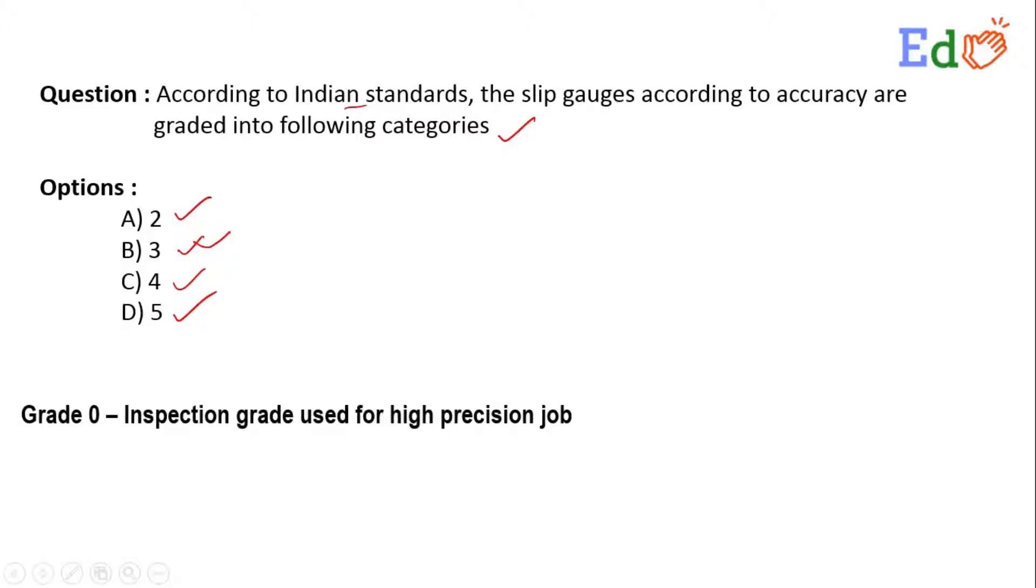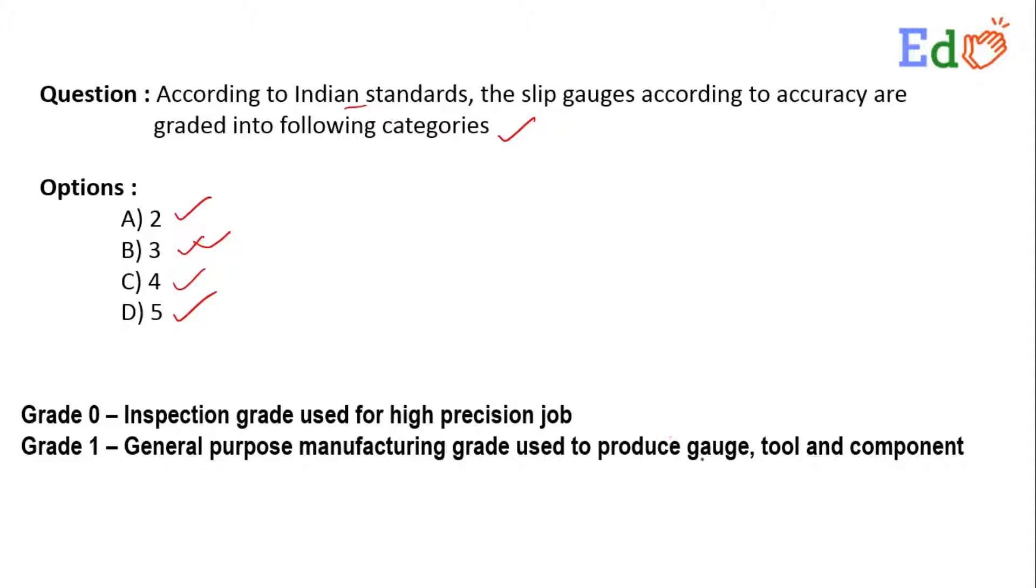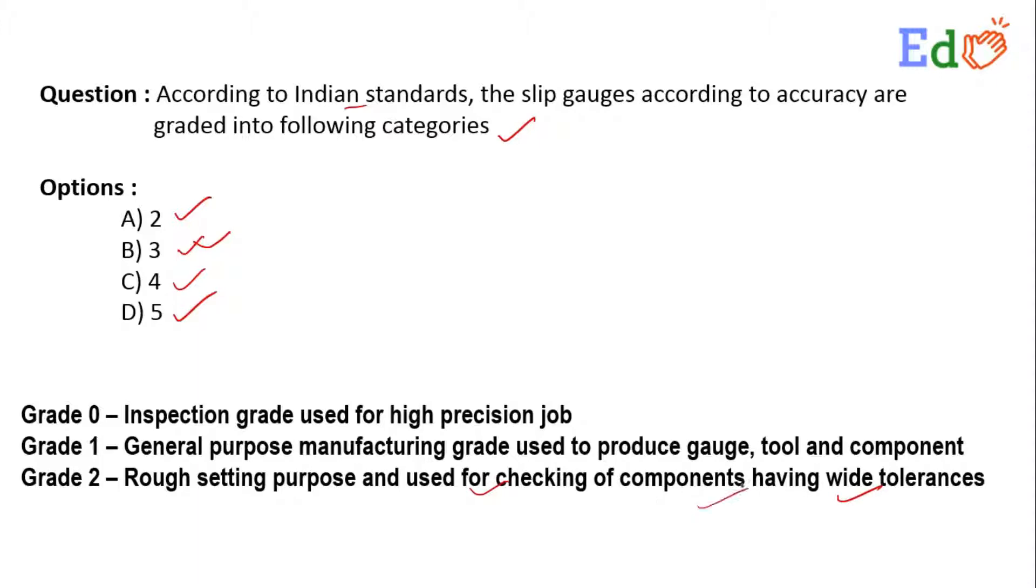Slip gauges have three categories. Grade 0 is used for inspection purposes for high precision jobs. Grade 1 is used for general purpose manufacturing to produce gauges, tools, and components. And Grade 2 is for rough setting purposes and used for checking components having wide tolerances. So here, option B) 3 is the correct option.